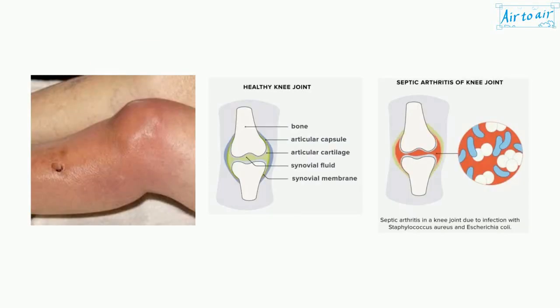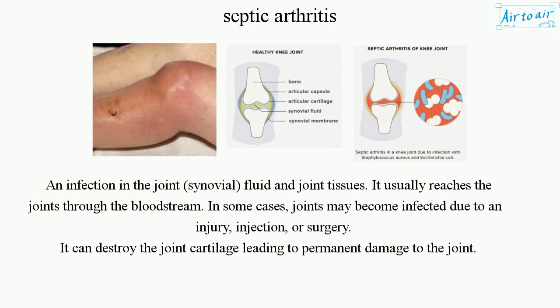Septic arthritis is an infection in the joint, synovial fluid, and joint tissues. It usually reaches the joints through the bloodstream. In some cases, joints may become infected due to an injury, injection, or surgery. It can destroy the joint cartilage, leading to permanent damage to the joint.